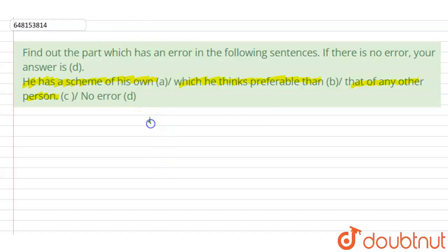The error is that 'than' should not be used here, but 'to' should be used instead. Why do we use 'to'? Because we're making a comparison in this sentence.